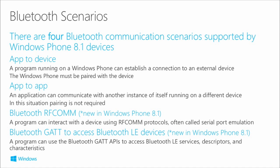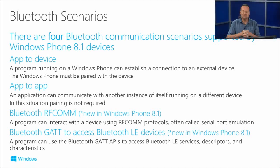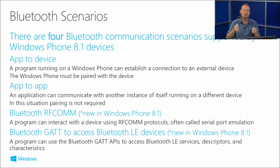The app can interrogate for the services that device offers, connect to that service, and then communicate directly with that device. There's an app-to-app scenario as well, where an application can communicate with another instance of itself running on a different device. The same app installed on two devices - one device can start searching for itself running on a nearby device. It uses the Bluetooth radios to discover if the app is present on the other device, and when running they can communicate over the Bluetooth connection. Pairing is not required for that.